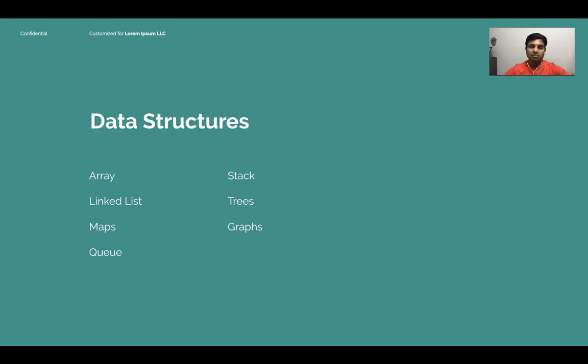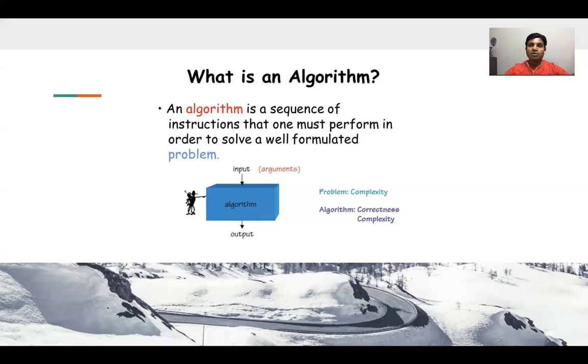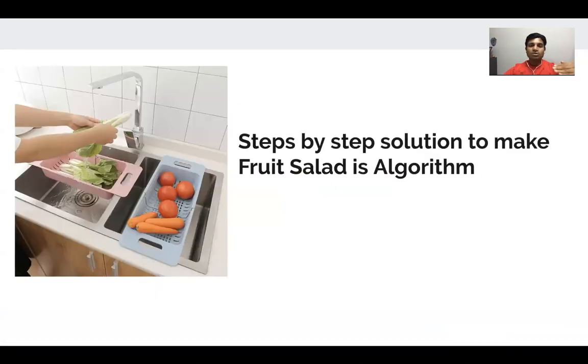I'll cover them in later PPTs. So now let's understand what is algorithm with the example of our fruit thing. If you have to make a fruit salad, you need to go through steps. Algorithm is a sequence of instructions that one must perform in order to solve a well formulated problem. You have a problem in hand - you need to make fruit salad. The step by step solution to make fruit salad is algorithm.